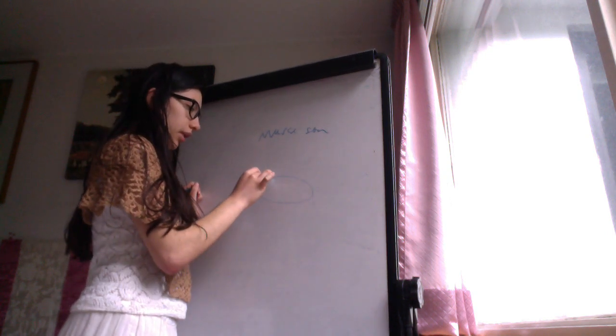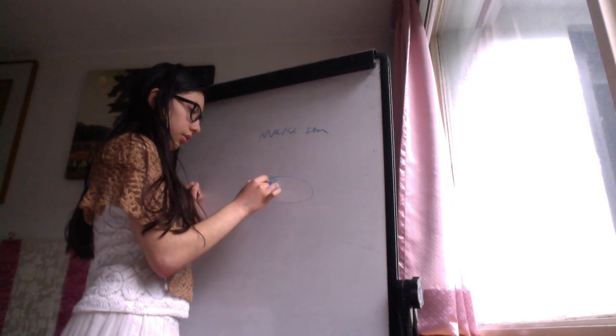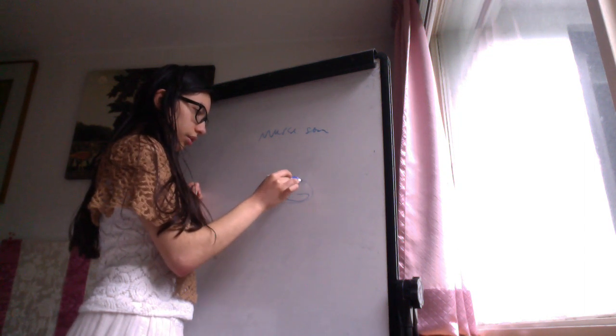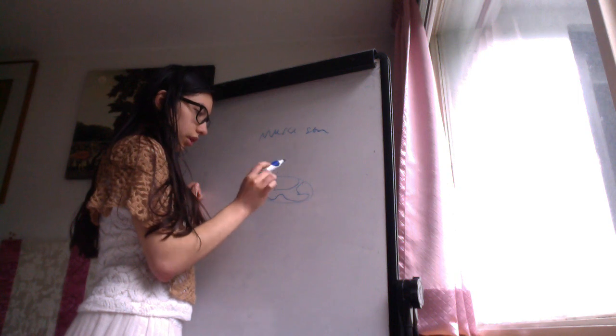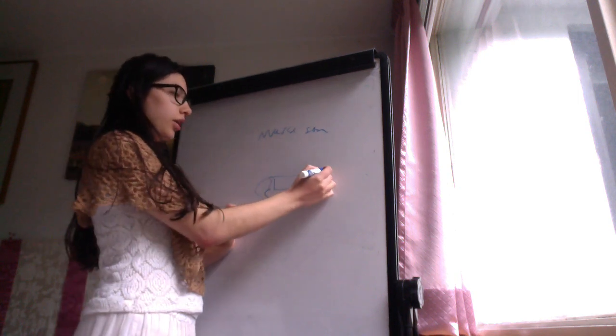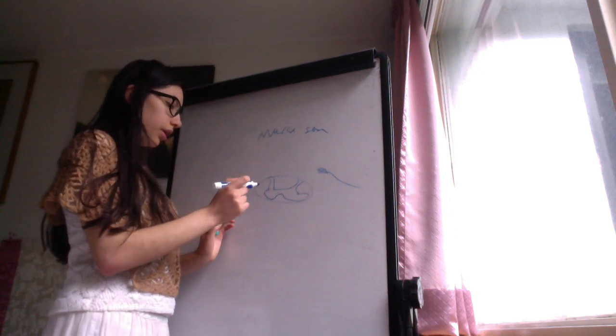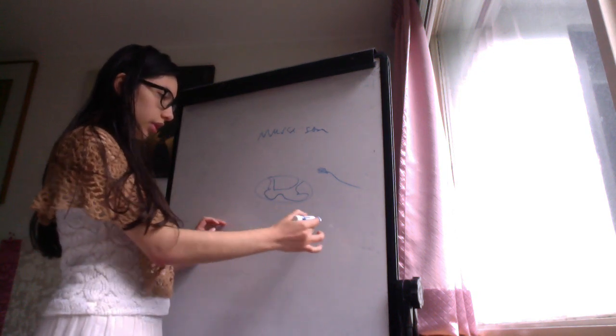We have the spinal cord, posterior cord, anterior cord, posterior cord, more or less. Here we have the dorsal root ganglia. We have a muscle. Here let's put a muscle.